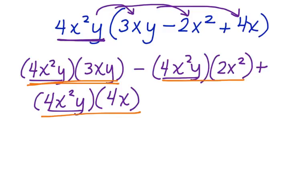4x squared y times 3xy. We can start with the numbers. We multiply 4 times 3, we get 12. x squared times x is x cubed. y times y is y squared. Now we have our first term.